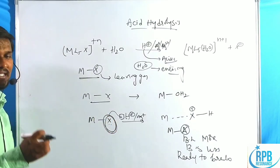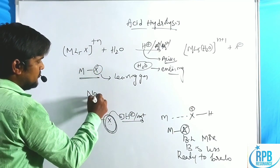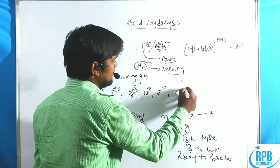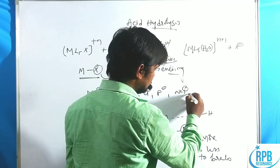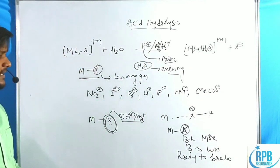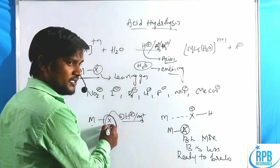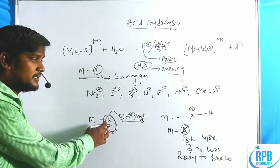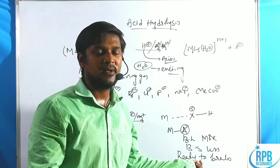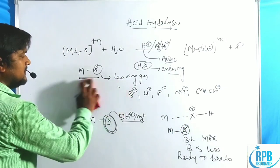The leaving group must have a lone pair of electrons. Possible leaving groups include NO₃⁻, I⁻, Br⁻, Cl⁻, F⁻, NCS⁻, and sometimes carboxylate groups. Ammonia sometimes does not participate. These are the groups involved in acid hydrolysis. The key phenomenon is: the metal-leaving group bond breaks, bond length increases, bond strength decreases, the bond is ready to break, and the water ligand enters.